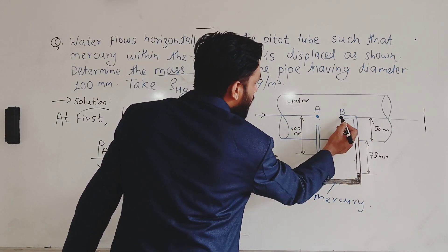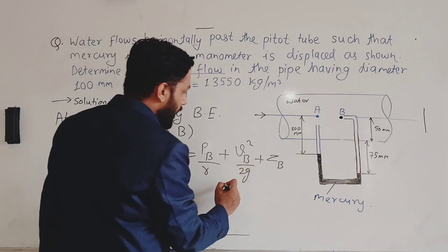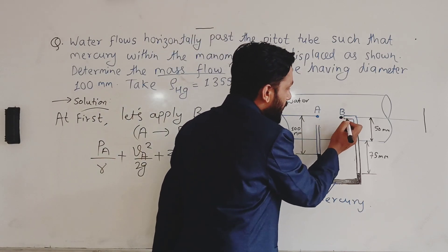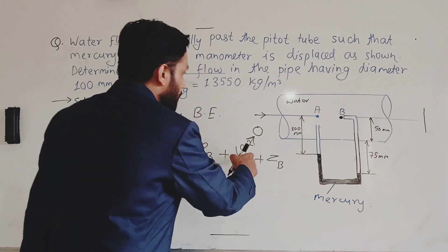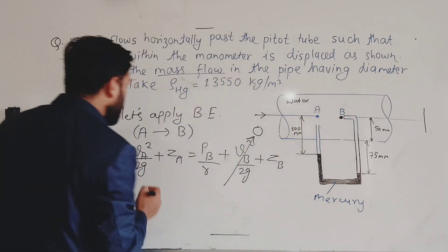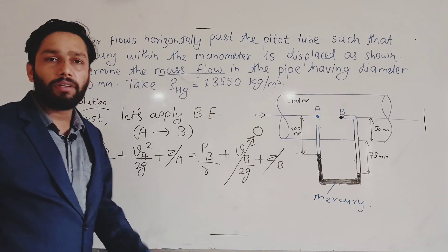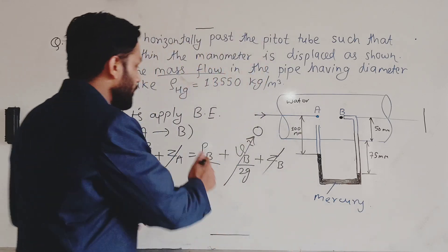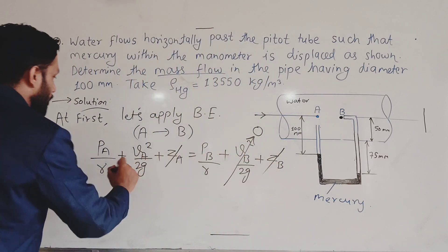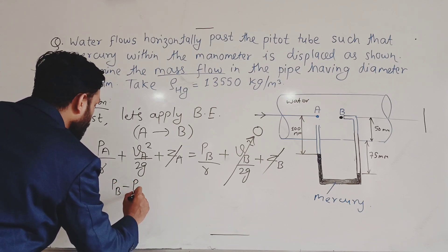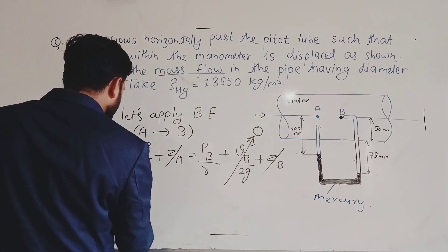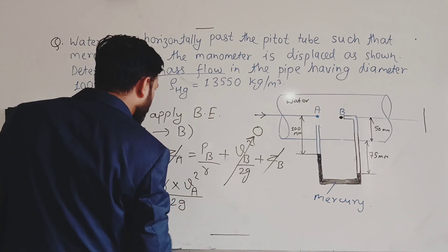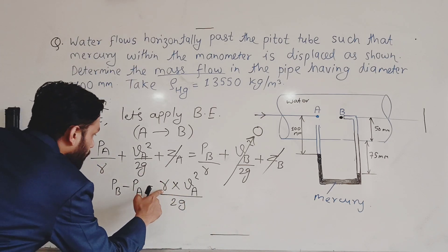This is the stagnation point, so velocity v_B equals zero because the Pitot tube works on the principle of making the velocity at that point equal to zero. Also, z_A and z_B cancel out because both points A and B are at the same horizontal level from the datum. So we can write: P_B − P_A = γ · v_A²/2g.